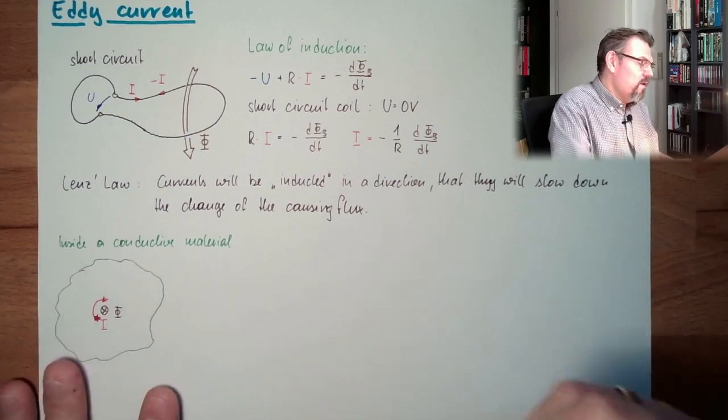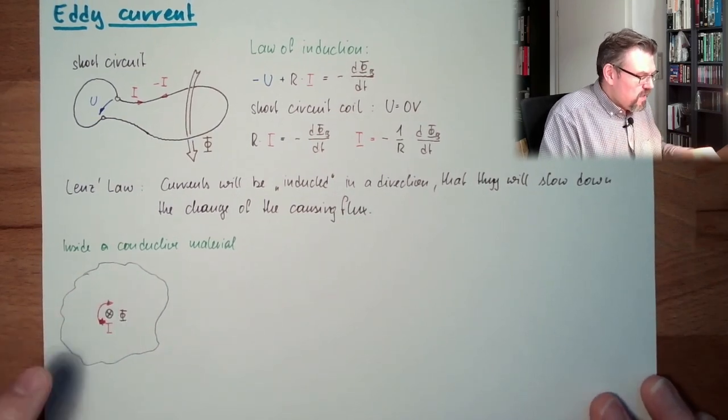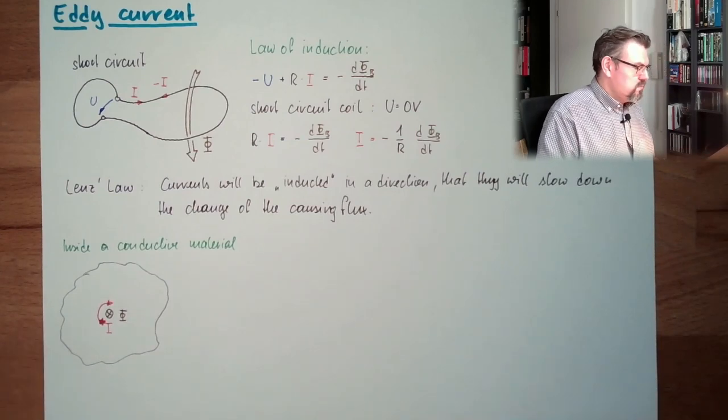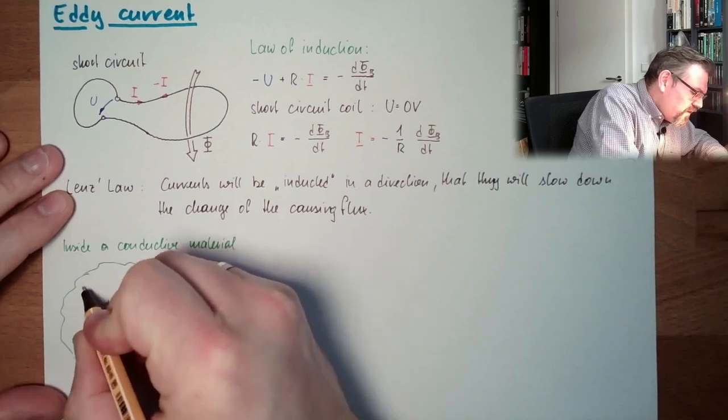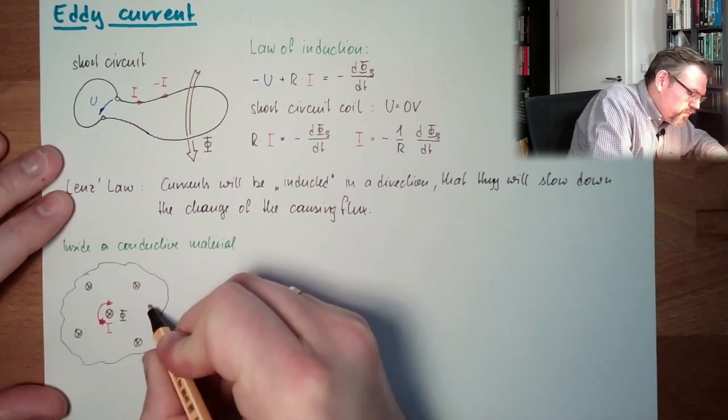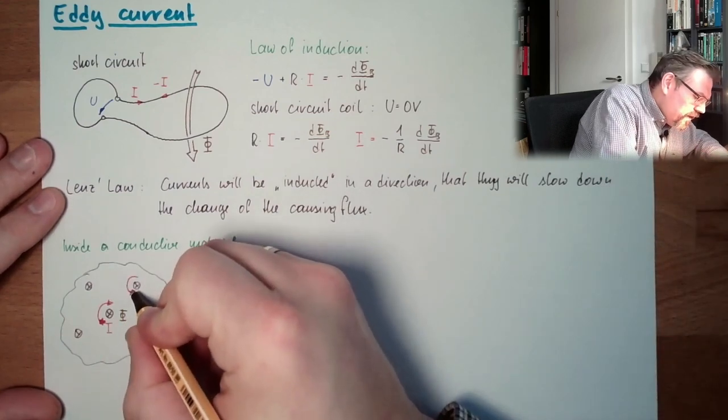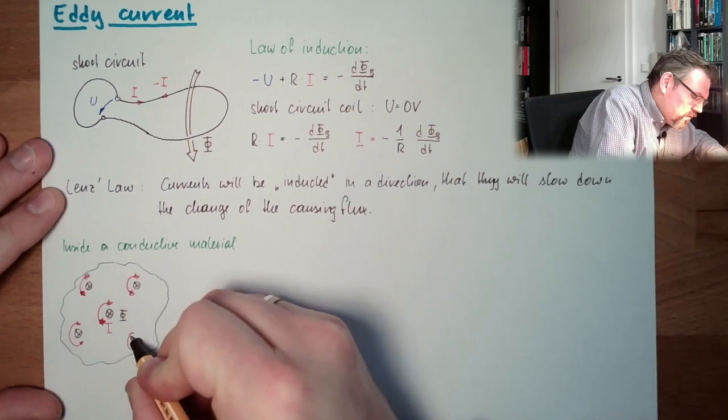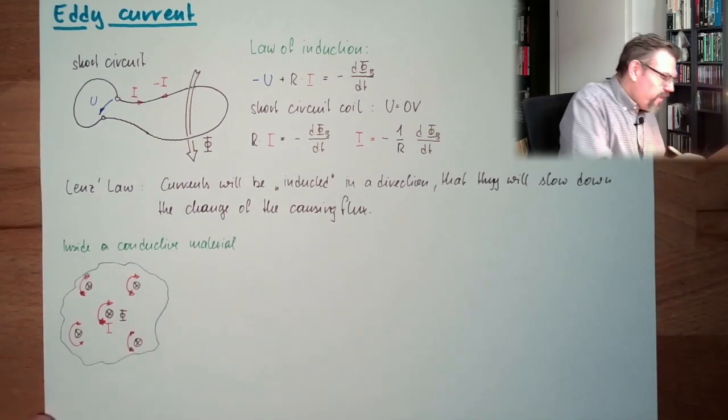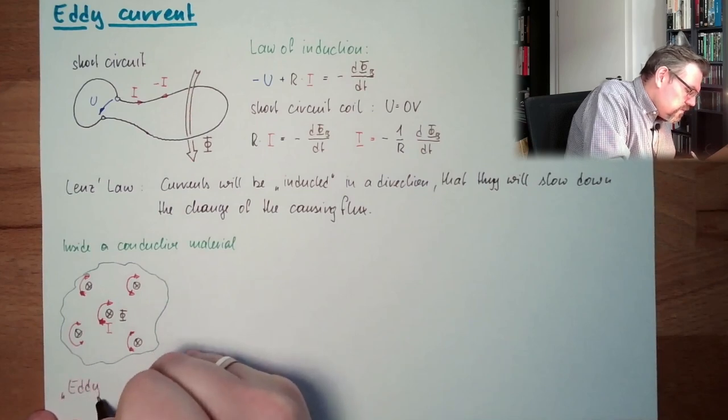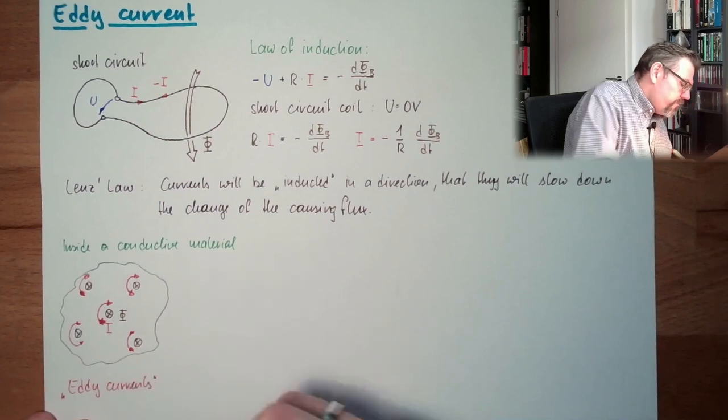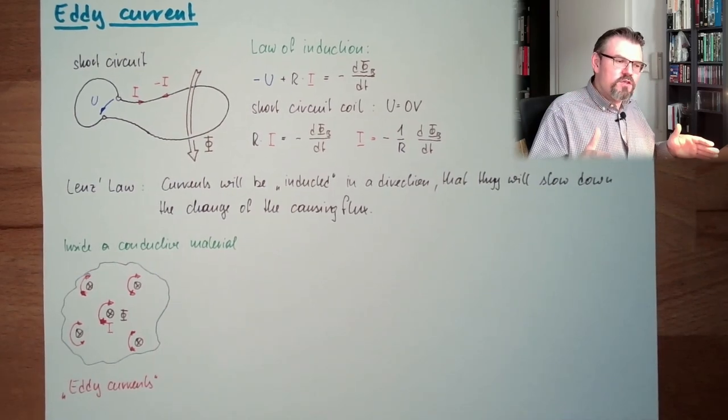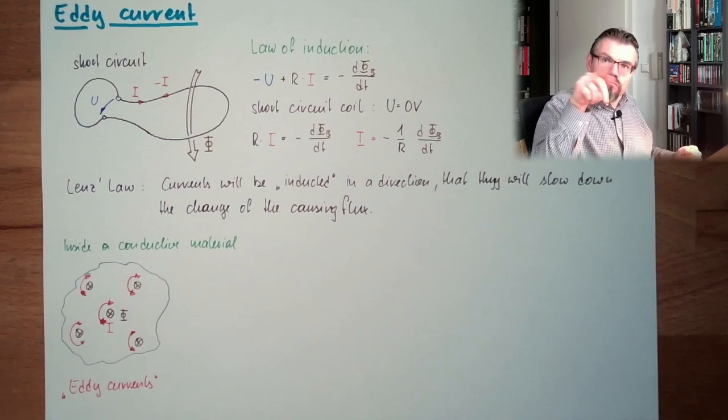Direction depends on if this flux is growing or not. If it's getting smaller, then the direction is in this direction. If it's growing, it will be in this direction, because then it will try to stop the growth. And of course, if I have more of this phi somewhere distributed in my material, then I have everywhere little currents, depending on the growth rate of the phi. And those things are called eddy currents.